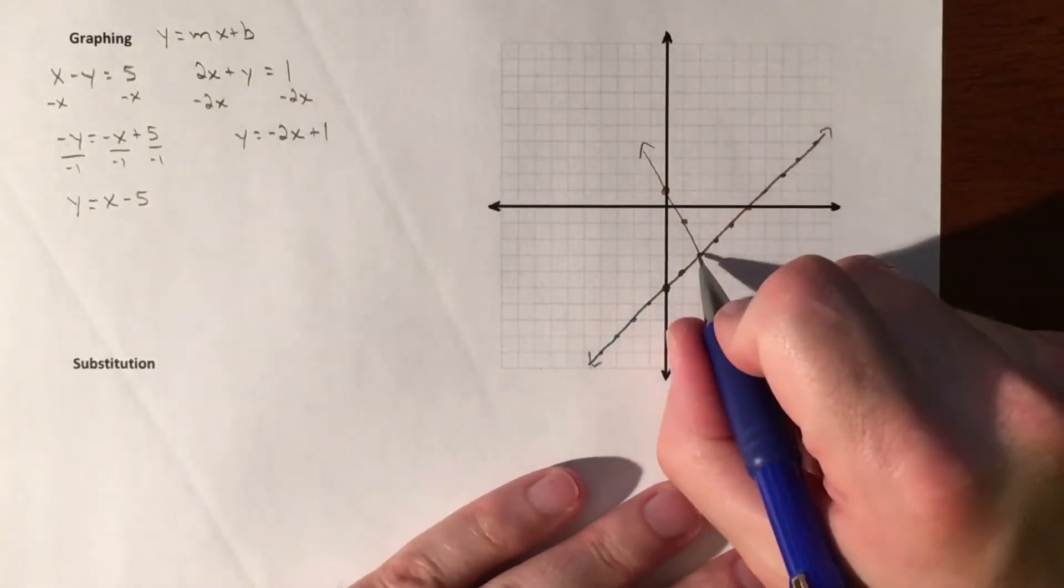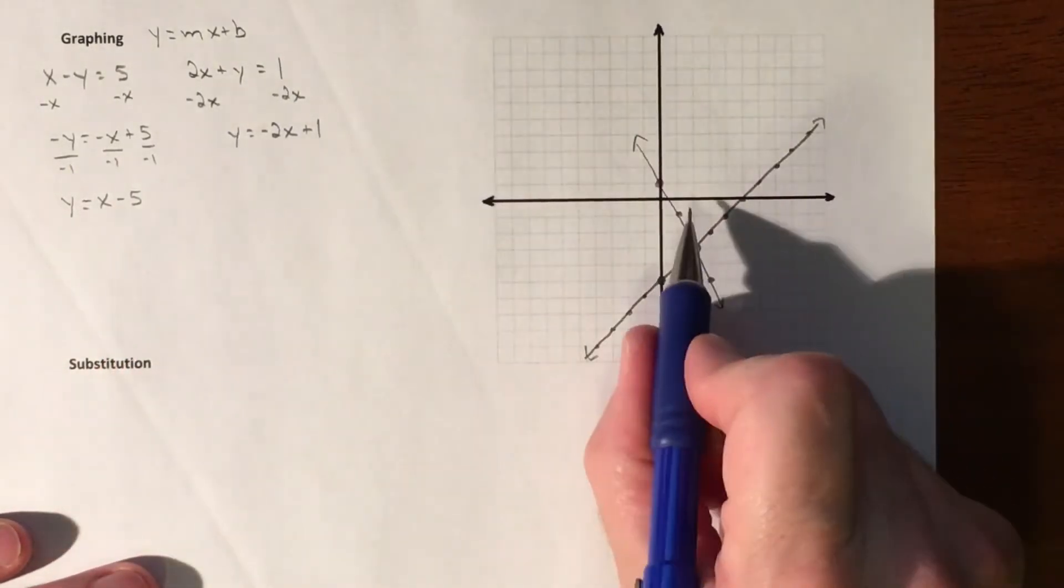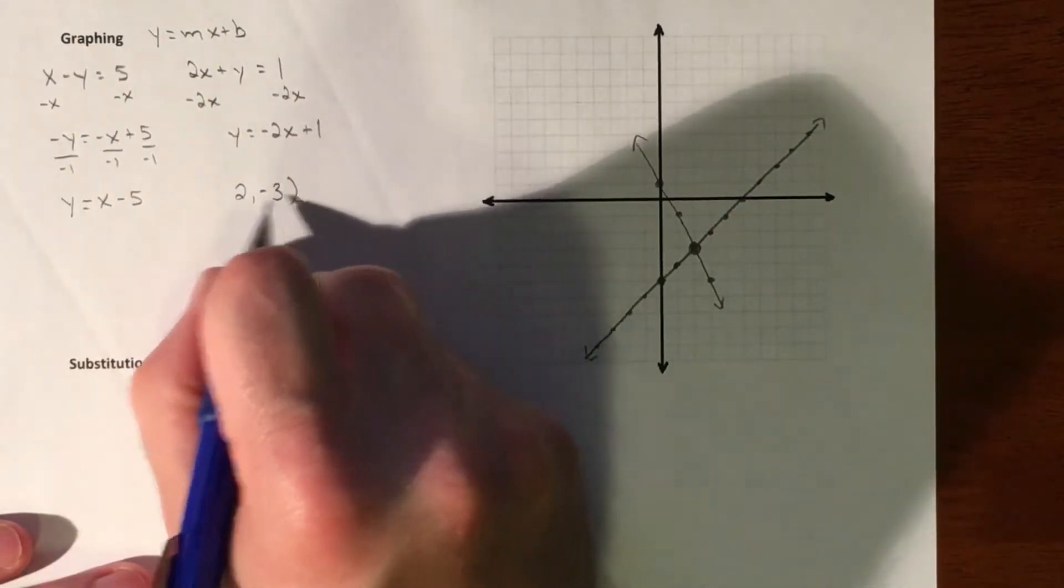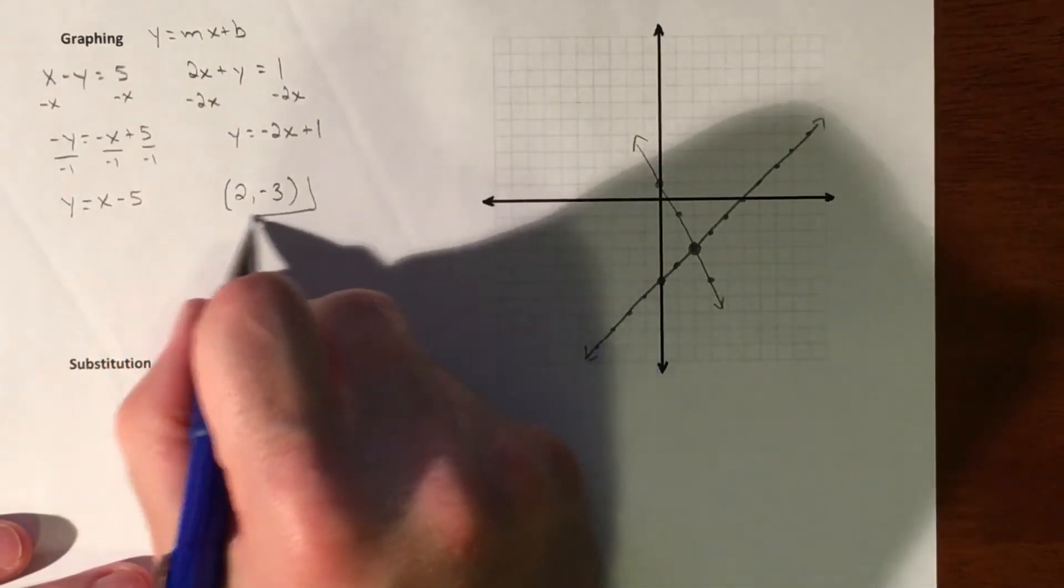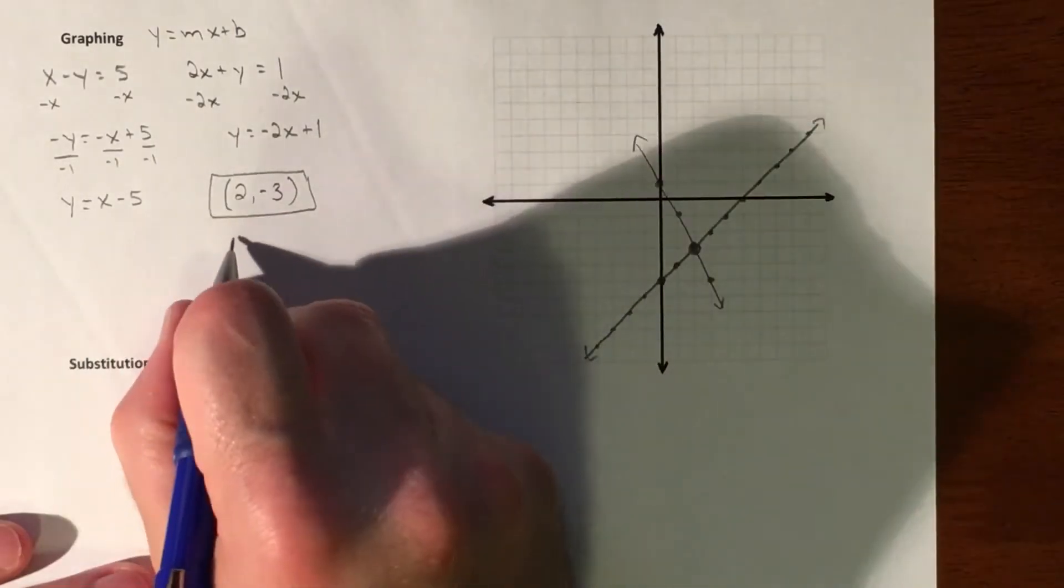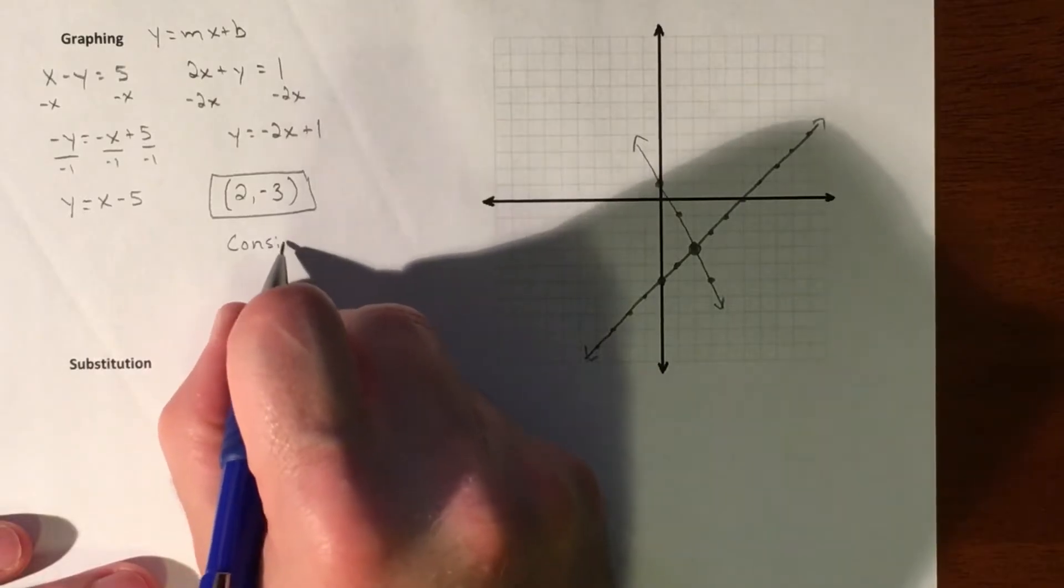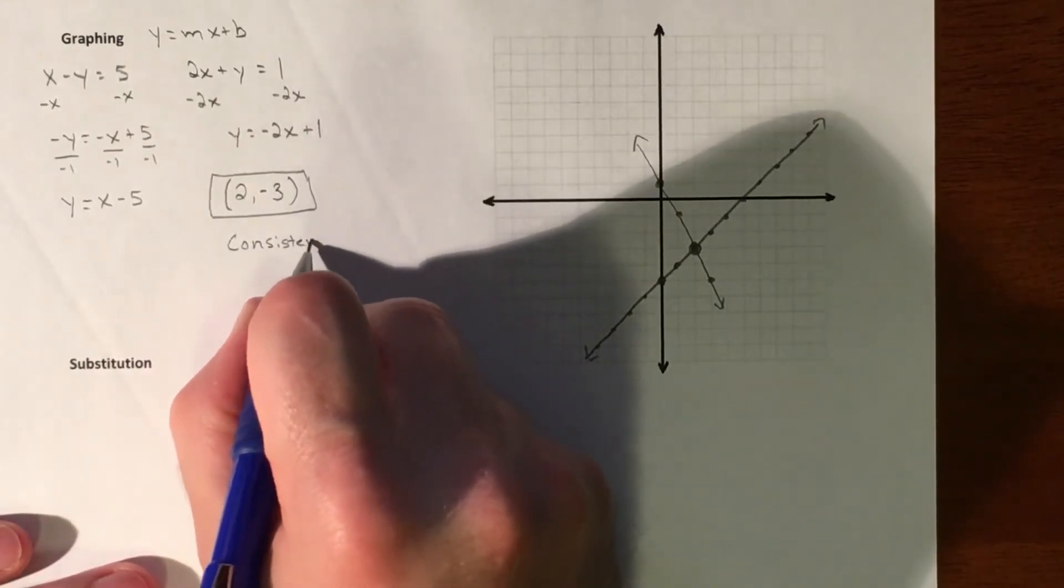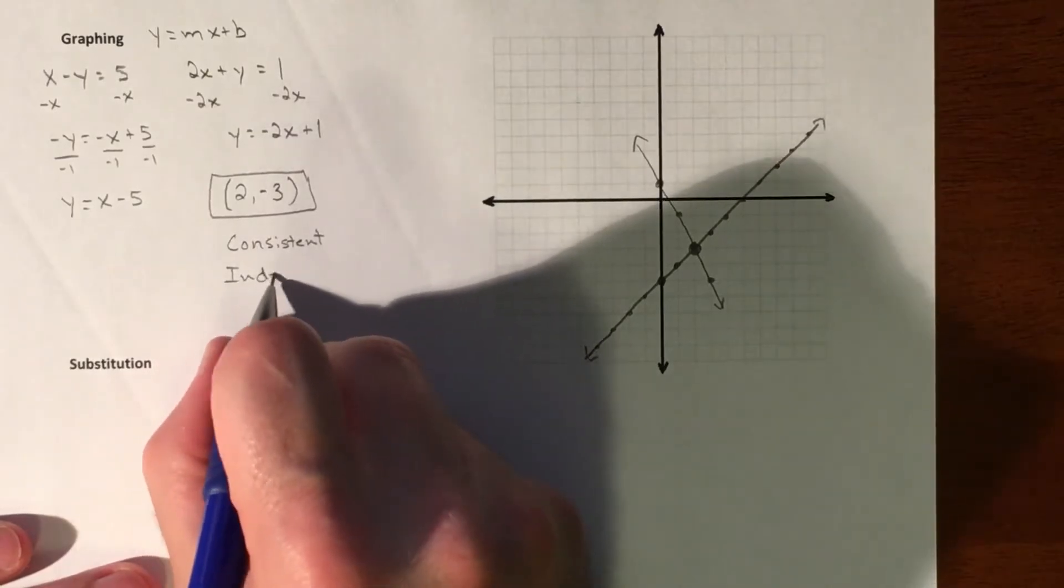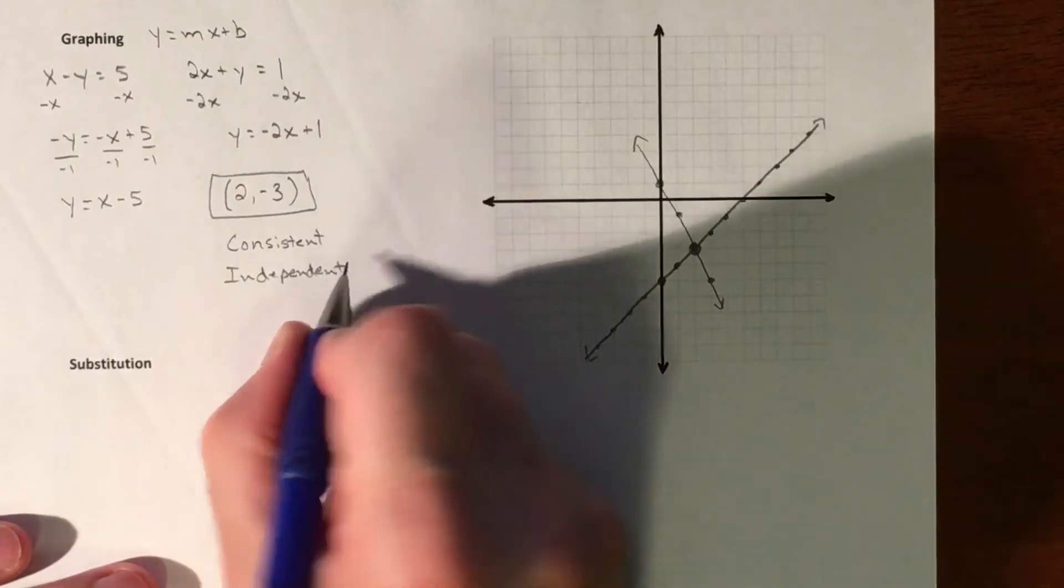Alright, so that is where our solution is. So our solution to this is 2, negative 3. And then we'll classify this. It has a solution, so it's consistent. It has one solution, so they are independent of each other.